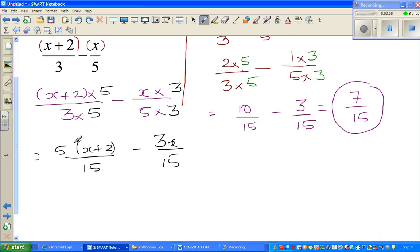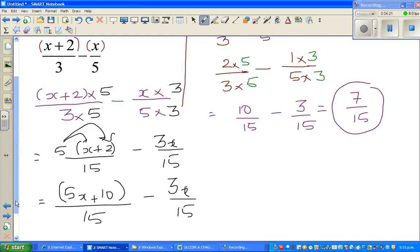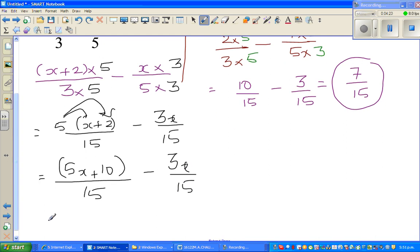Here you have to simplify or expand this or distribute this. So you get 5 times x is 5x plus 5 times 2 is 10. I'll put this in brackets. It's always good to put this in brackets. Divide by 15 minus 3x over 15. Now as you can take away here, you can take away the numerators. This is 5x plus 10 minus 3x over 15.